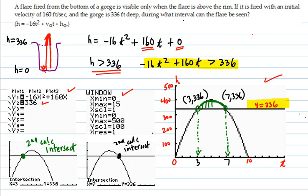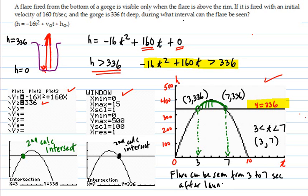So the time interval that the flare can be seen is from 3 is less than t is less than 7 seconds. And so that's interval notation 3 open to 7 open. And then you could say flare can be seen from 3 to 7 seconds after launch.